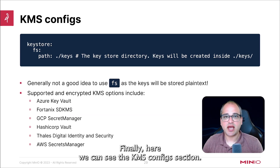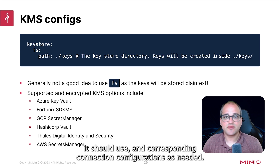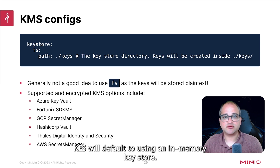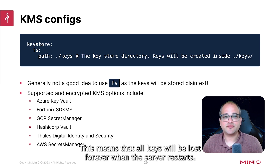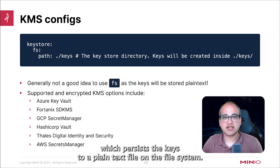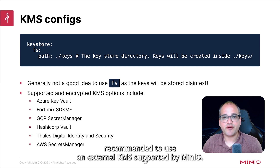Finally, here we can see the KMS configs section. This is the configuration block where we can tell KES which backing KMS it should use and corresponding connection configurations as needed. Do note that if this section is omitted, KES will default to using an in-memory keystore. This means that all keys will be lost forever when the server restarts. Another option for dev and test servers is the FS configuration, which persists the keys to a plain text file on the file system. For production-grade systems, it's always strongly recommended to use an external KMS supported by MinIO.